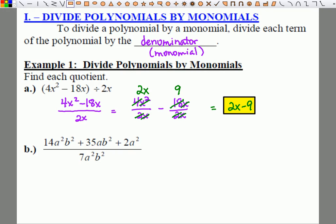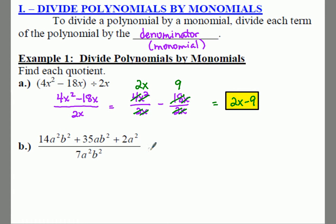Let's do letter b. For letter b, we have to rewrite this fraction. All three terms are divided by 7a²b². So we're going to have 14a²b²/7a²b² plus 35ab²/7a²b² plus 2a²/7a²b². Once again, we're going to cancel up and down.